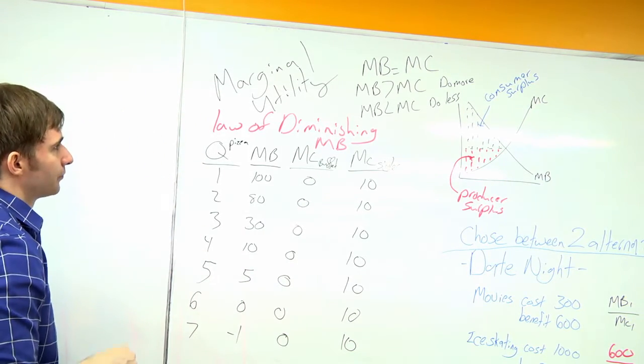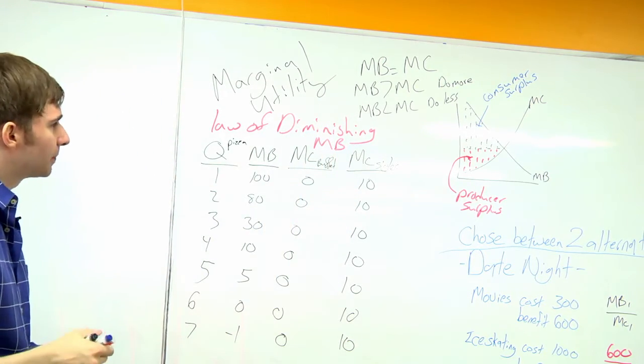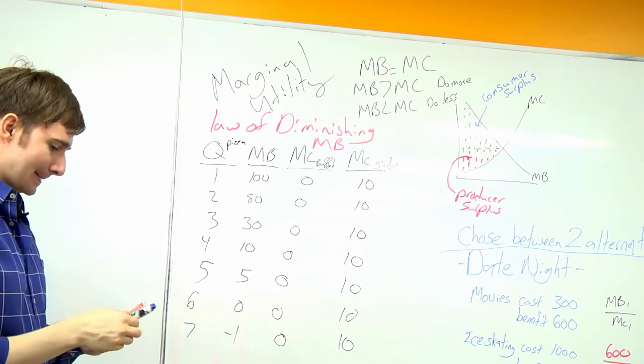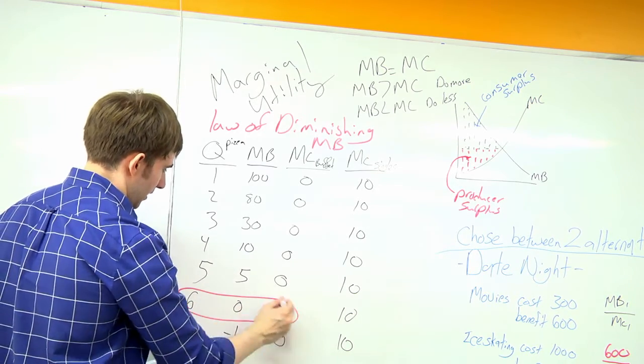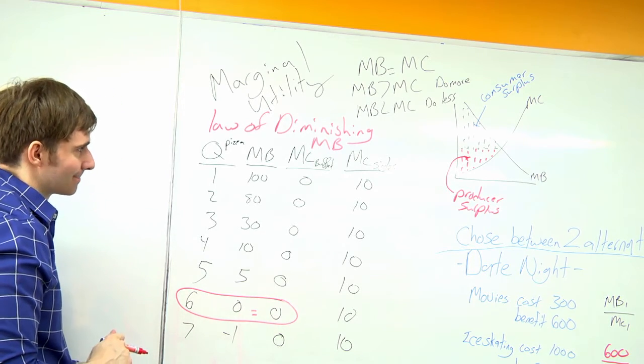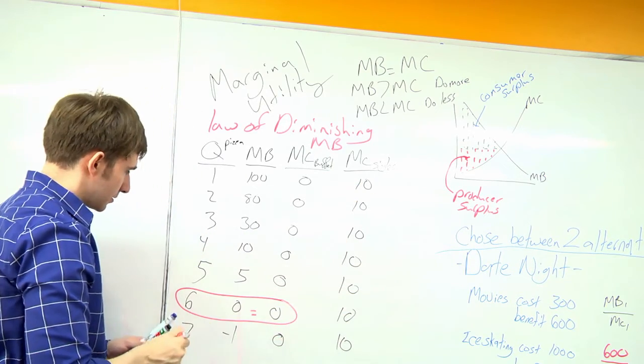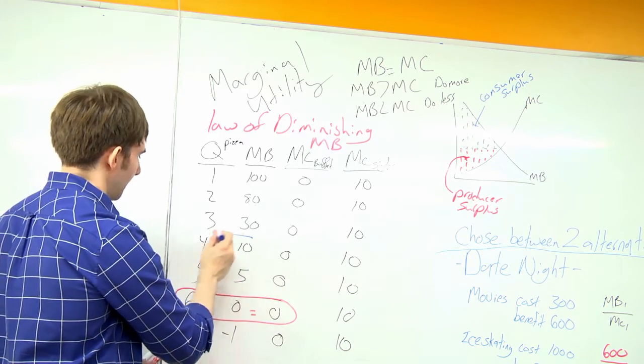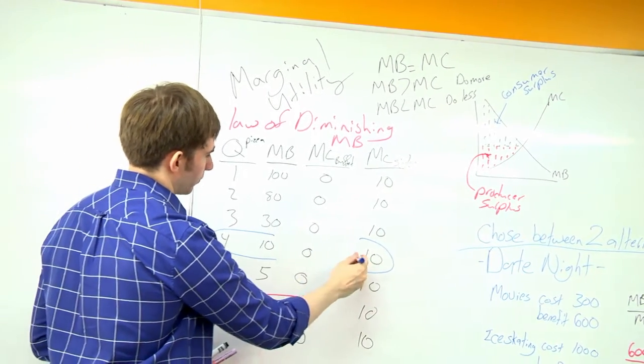Looking at this diagram and this rule, how many slices of pizza would I want to eat at a buffet? So at a buffet, I would want to eat six slices. My marginal benefit equals my marginal cost. If I had to pay individual slices, I would stop at four, where my marginal benefit equals my marginal cost.